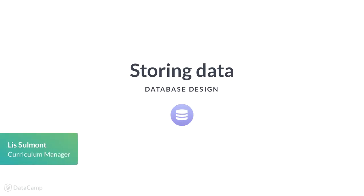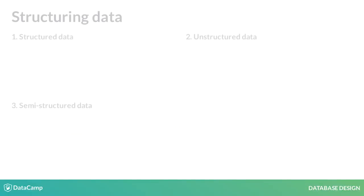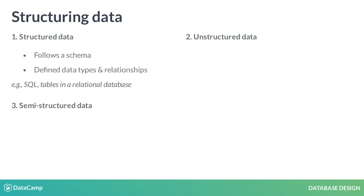Let's discuss the different ways you can store data. Data can be stored in three different levels. The first is structured data, which is usually defined by schemas. Data types and tables are not only defined, but relationships between tables are also defined using concepts like foreign keys.